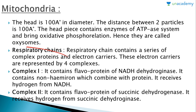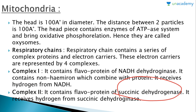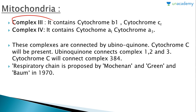The respiratory chain contains a series of complex proteins and electron carriers represented by four complexes. Complex I contains the flavoprotein NADH dehydrogenase and non-heme iron combined with protein; it receives hydrogen from NADH. Complex II contains the flavoprotein succinic dehydrogenase and receives hydrogen from succinic dehydrogenase.